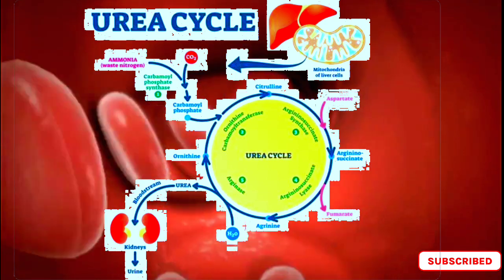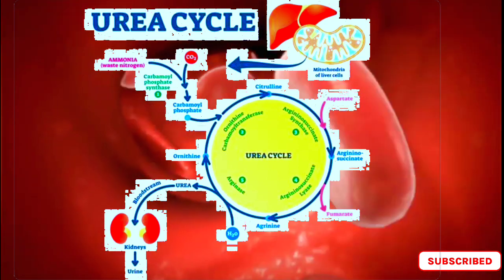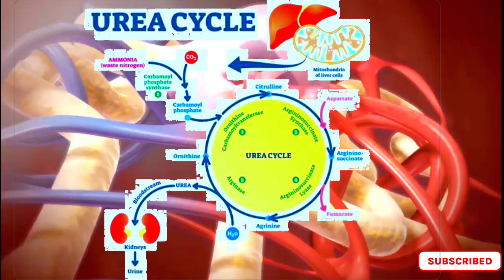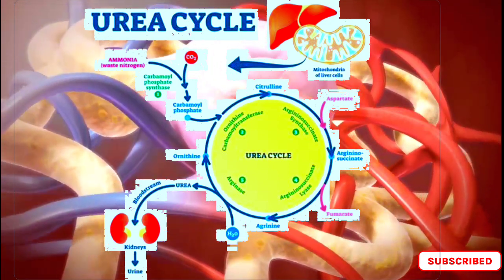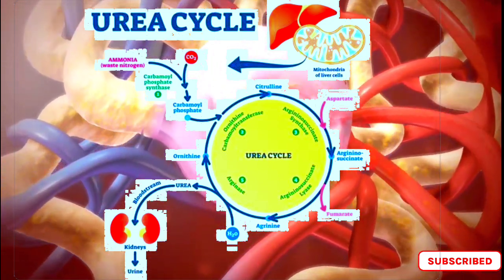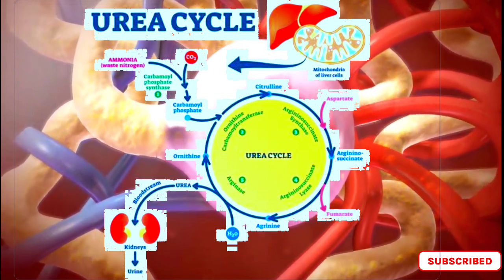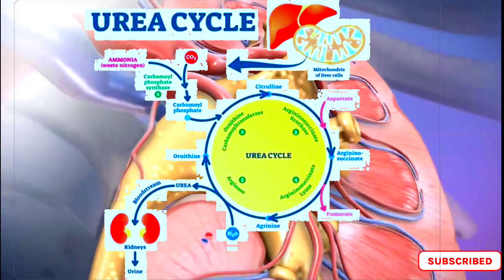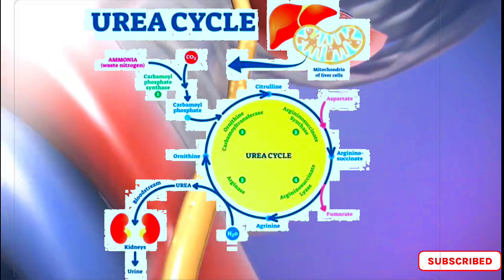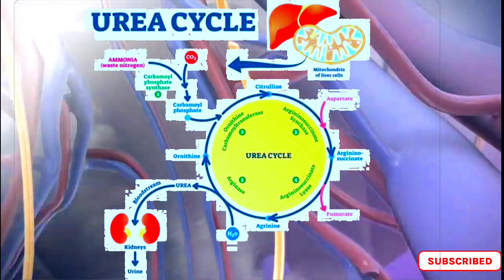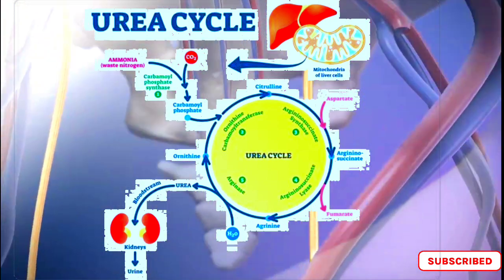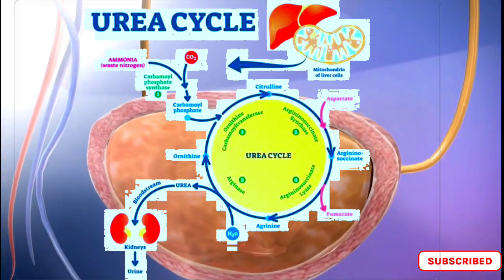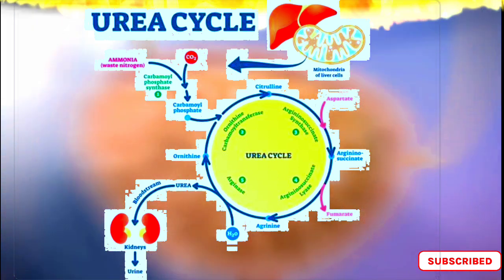The cycle starts with the conversion of ammonia to carbamoyl phosphate, which is then combined with ornithine to form citrulline. Citrulline is then transported into the mitochondria, where it reacts with aspartate to form argininosuccinate. Argininosuccinate is then cleaved into fumarate and arginine, which is then hydrolyzed to form urea and ornithine.